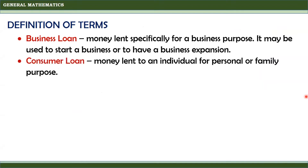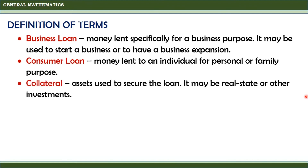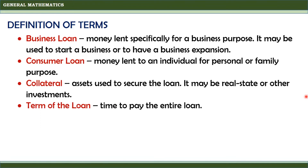A consumer loan is money lent to an individual for personal or family purpose. Collateral are assets used to secure the loan — it may be real estate or other investments. The term of the loan is the time to pay the entire loan. The following are some examples of business loans and consumer loans.